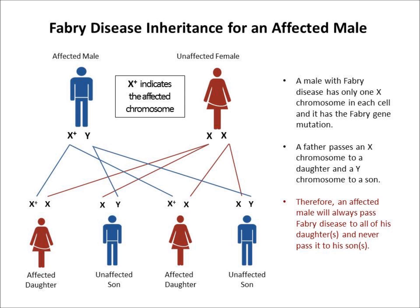This slide shows how a male with Fabry disease passes it to his children. When a male has Fabry disease, his only X chromosome in a cell is affected. Since a male always passes an X chromosome to a daughter during conception, all daughters of affected males will have Fabry disease. Since a male always passes a Y chromosome to a son during conception, the son of an affected male cannot inherit Fabry disease from their father.